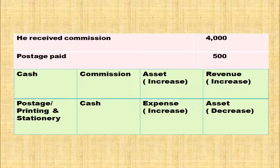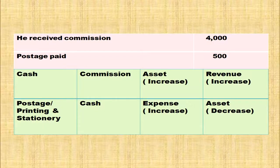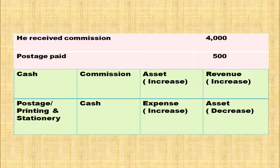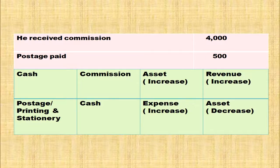Postage paid, Rs. 500. Postage being an expense — you can include it under the head postage or as printing and stationery account. Cash is going from the business when it is paid. Postage expenses increase — when expense increases, it will be debited. Cash being an asset is decreasing in this transaction, so it is credited. Postage: debit; cash: credit.